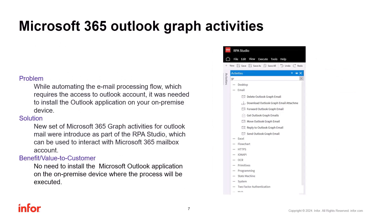While automating an email processing flow that requires access to your Outlook account, it was previously necessary to install the Outlook application on the on-premise device where the flow would be tested or executed in production. For that, we introduced the new set of Microsoft 365 Graph activities, which allows interaction with your Outlook account as part of the cloud environment Microsoft Office 365. Those activities are part of RPE Studio and use interaction with Microsoft Office 365 Graph APIs, so there is no longer a need to install the Microsoft Outlook application on the on-premise device.